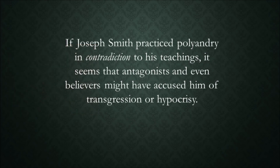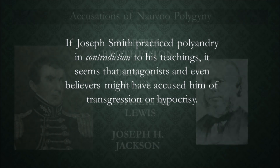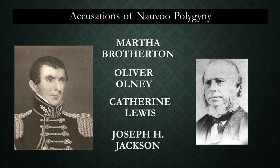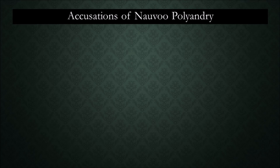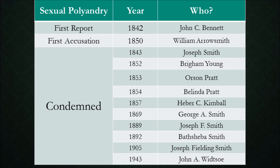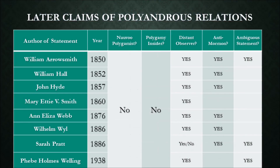If Joseph Smith practiced polyandry in contradiction to his teachings, it seems that antagonists and even believers might have accused him of transgression or hypocrisy. Several Nauvooans accused Joseph and the Latter-day Saints of polygyny, or a plurality of wives. No records of accusations of polyandry in Nauvoo have been found. The chronology of polyandry statements shows that the first report was in 1842 by John C. Bennett, but the first accusations were not voiced by antagonists until eight years later in 1850. All statements at all times from church leaders and members condemn polyandry. The later claims of polyandry were not made by Nauvoo polygamists or polygamy insiders who remembered polyandry — they were accusations from distant observers, most of whom were anti-Mormons.